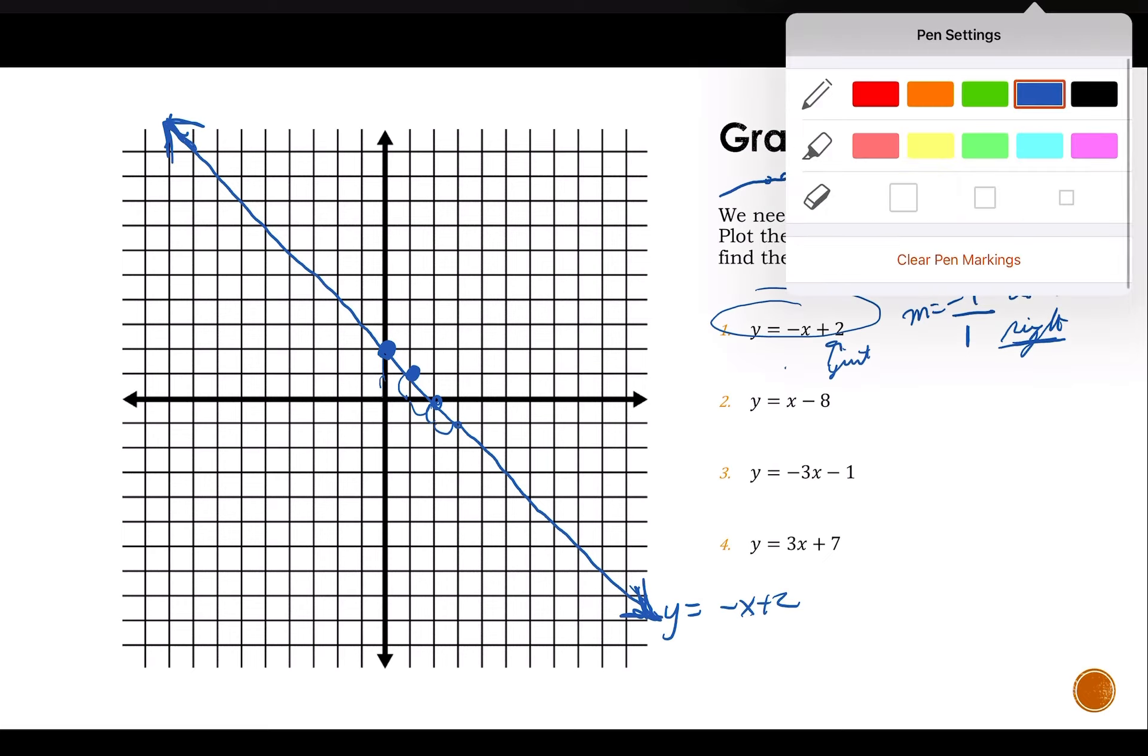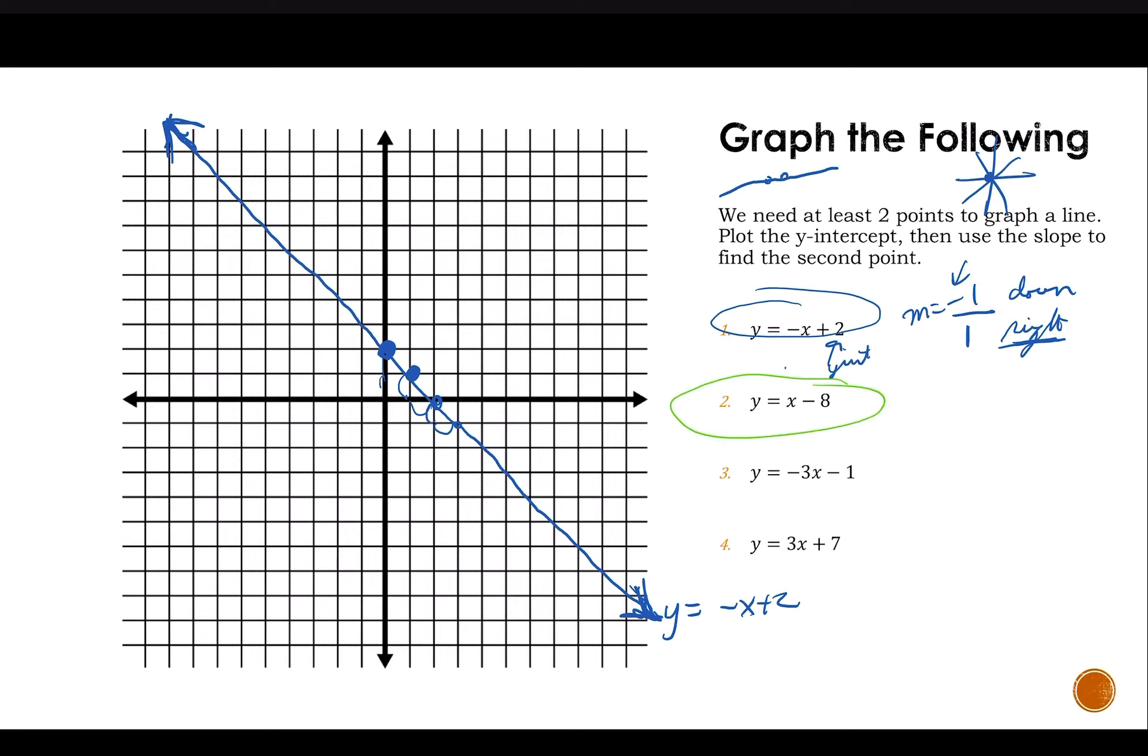Let's do another example. Green. I've got y equals x minus 8. So my y-intercept is negative 8, and my slope is 1. It's positive, so it's going uphill. I'm going to go up 1, right 1. Again, we always go to the right. So I go to negative 8 first. 1, 2, 3, 4, 5, 6, 7, 8. So negative 8.